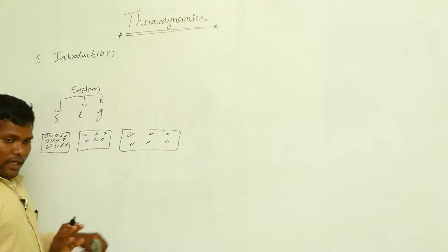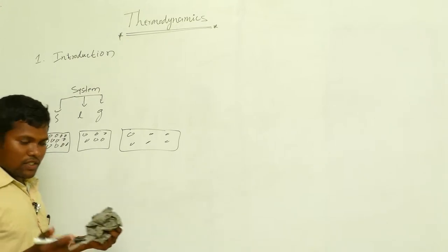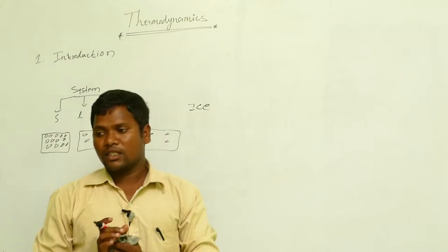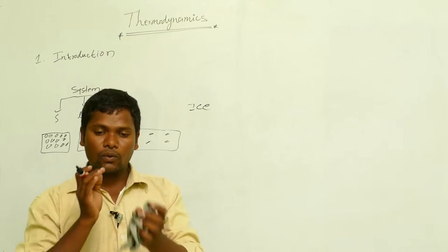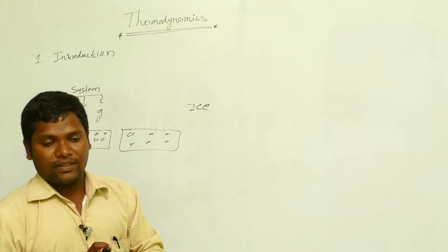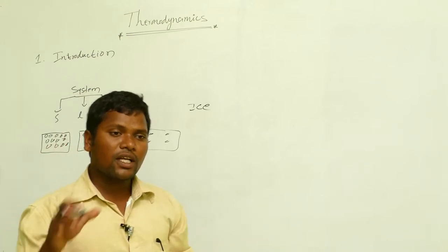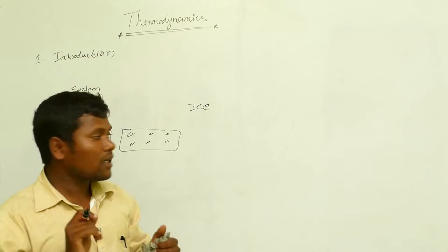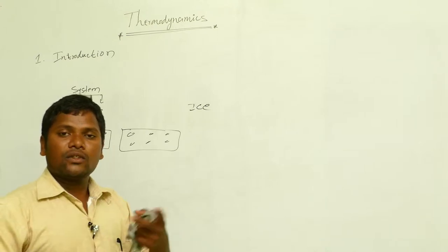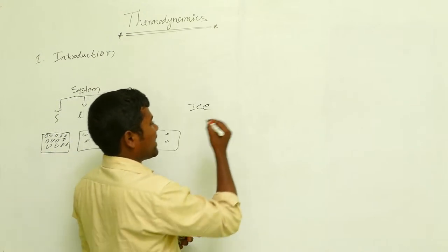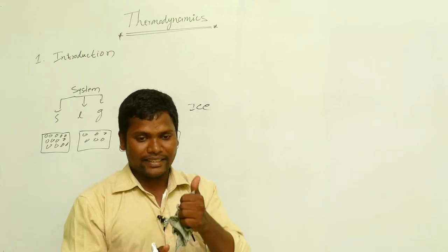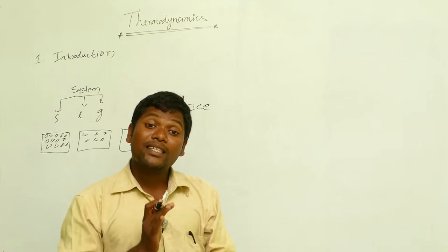Which energy exists in this system? Take the best example: suppose there is ice. Take two ice pieces and rub them against each other — automatically friction happens and they turn into liquid. There is no external heat, yet the substance changed due to friction. Another example: in a vehicle, the bearing parts rub against each other, making sound, and at that place we get heat.